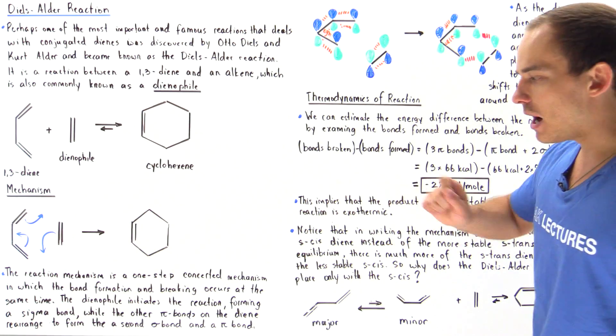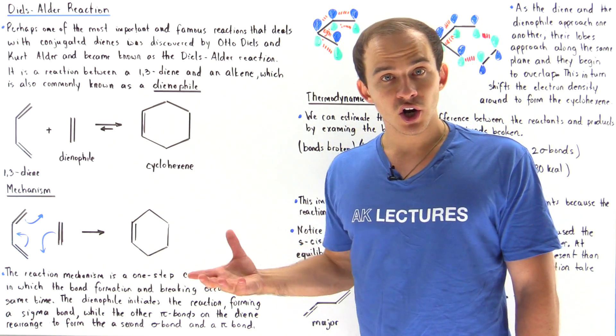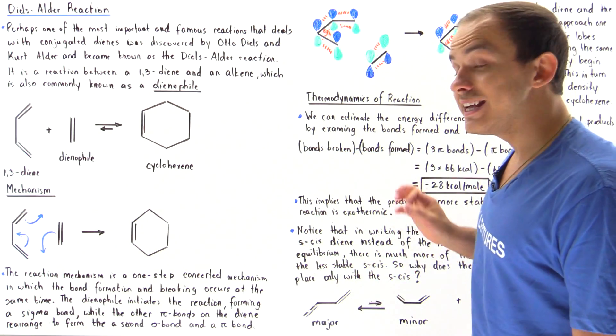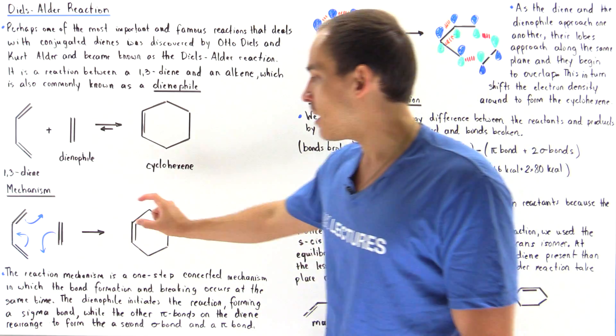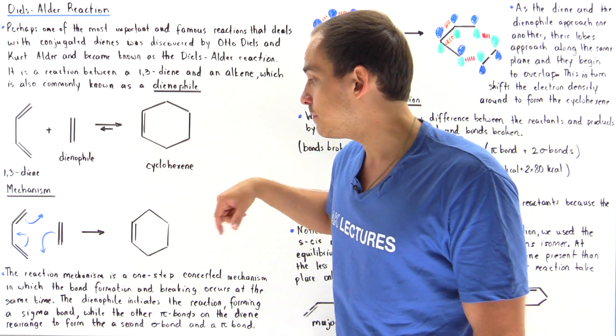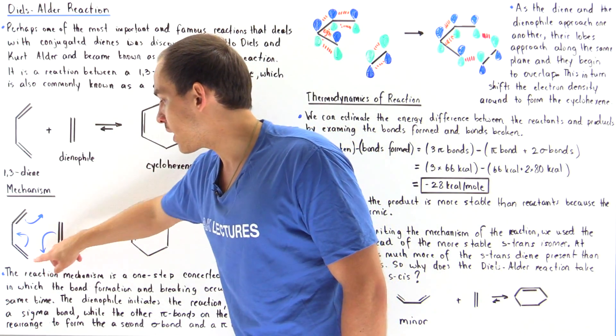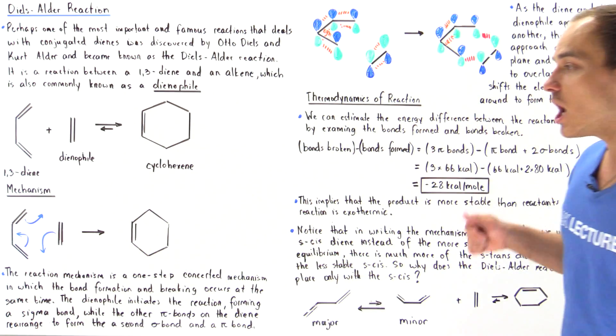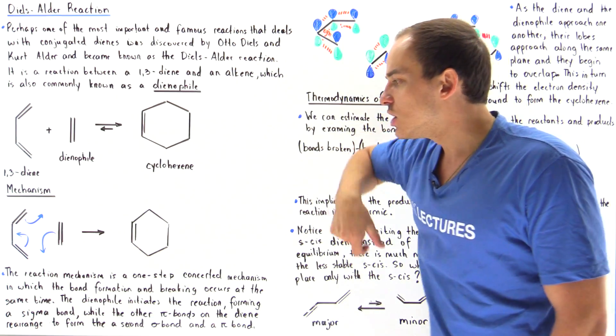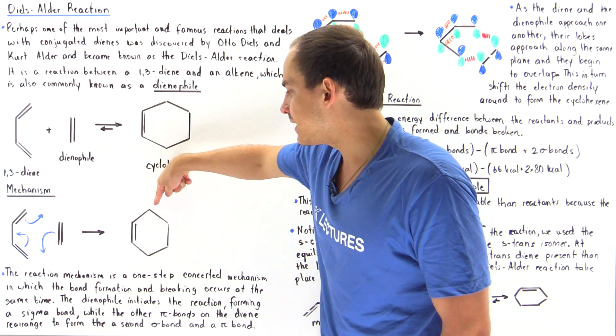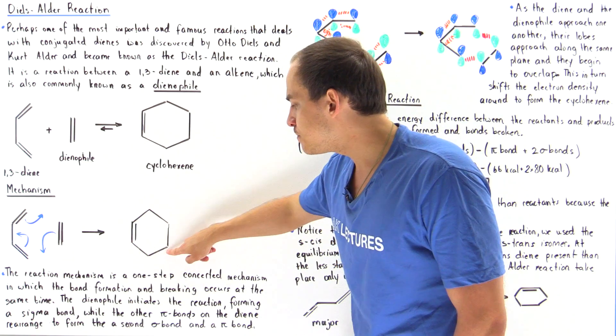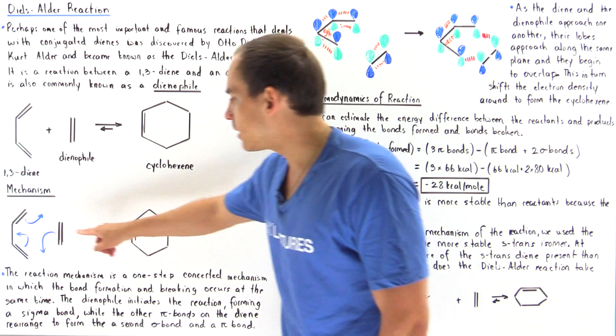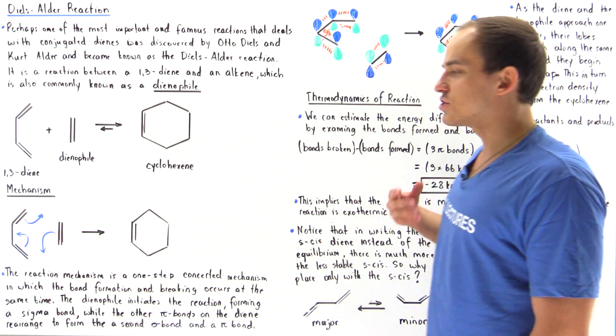The reaction mechanism is a one-step concerted mechanism in which bond formation and breaking occurs at the same exact time. The dienophile initiates the reaction by using its pi bond, the two electrons in the pi bond, to interact with this carbon to form our sigma bond, while the other pi bonds are rearranged to form a pi bond and a sigma bond. So this bond is formed, this bond is formed, and this bond is formed, while these three pi bonds are broken.